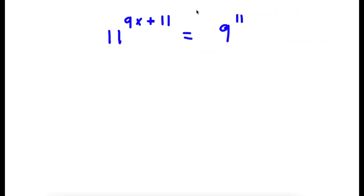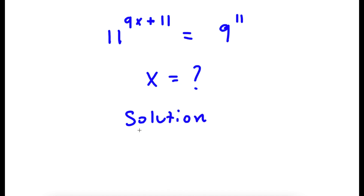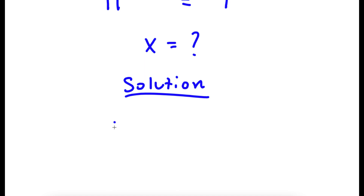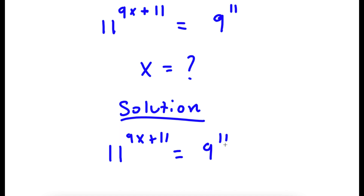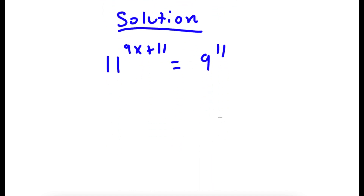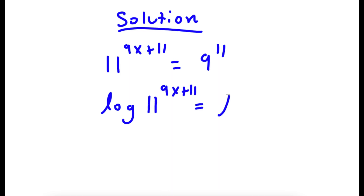All right, so in this problem I have 11 to the power of 9x plus 11 is equal to 9 to the power of 11. I want to find the value of x. Starting with 11 to the power of 9x plus 11 is equal to 9 to the power of 11, if I take the log on both sides, I have log of 11 to the power of 9x plus 11 is equal to log of 9 to the power of 11.